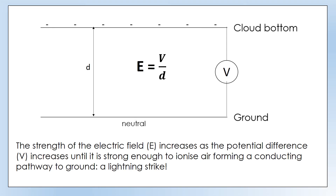What decides how strong the field is? The bigger the potential difference gets — the more charge that builds up — the stronger the electric field gets. We'd show that by drawing field lines closer and closer together. Eventually this electric field gets strong enough to ionize air: it literally pulls electrons out of atoms and forms ions. That means we form a conducting pathway to ground, which means we get a lightning strike. A lightning strike is effectively a current — we have a potential difference, and we now have charge carriers because we've ionized the air.